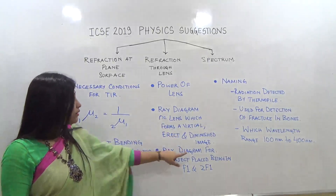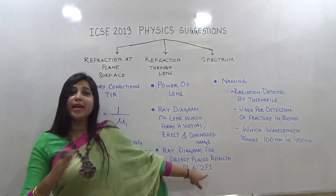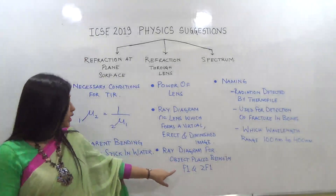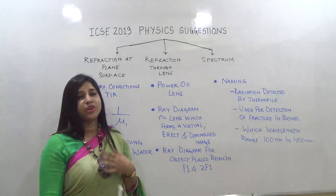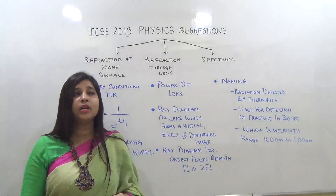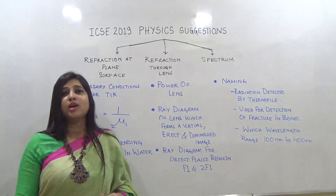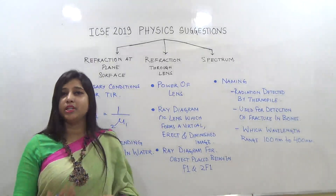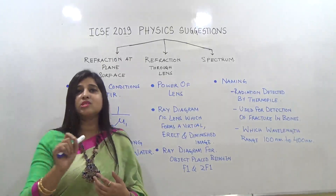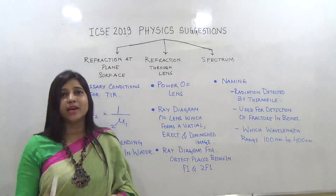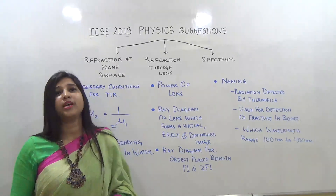Next is the ray diagram for an object placed between F1 and 2F2 of a convex lens — simply draw the required ray diagram. One very important reminder: in ray diagrams, please don't miss the arrows. Many students make the mistake of missing arrows, which depict the direction of the ray. If you miss them, you will not get marks for that.